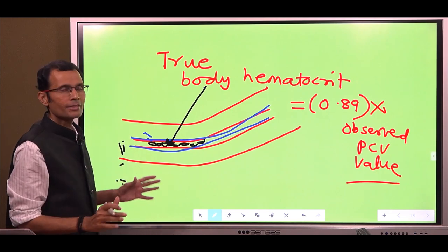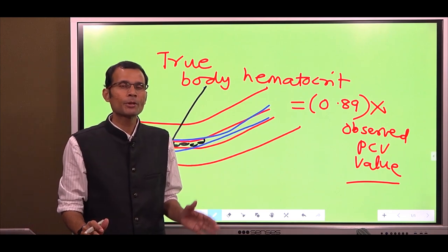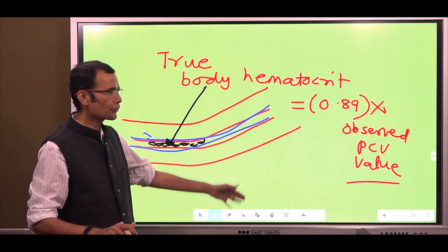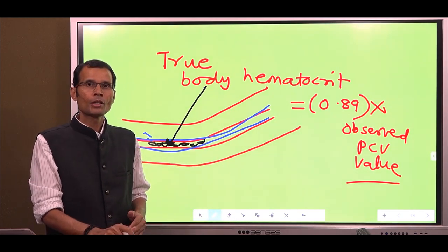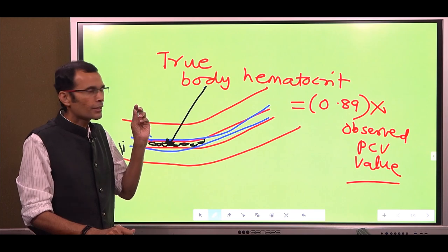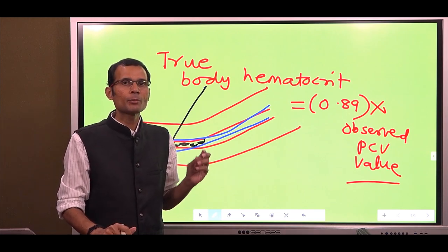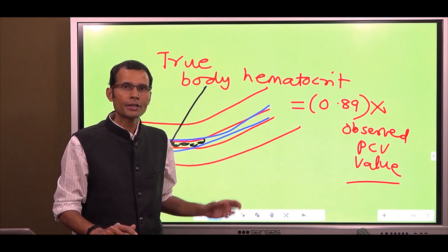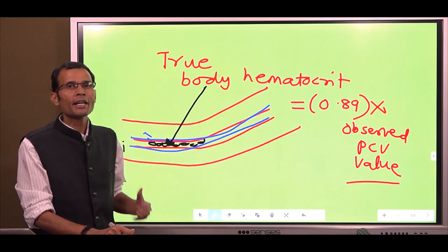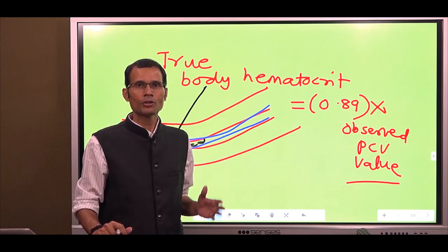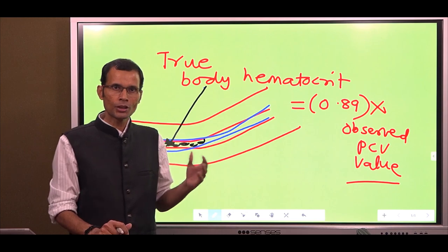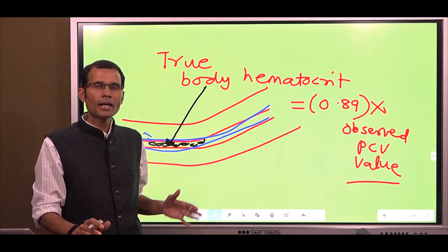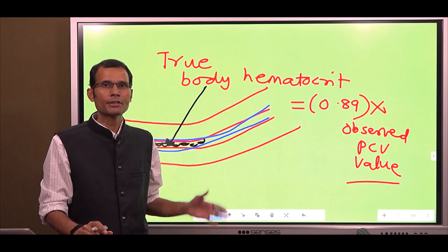So that is the difference between the observed PCV value, which is observed in the Wintrobe's tube, versus what is the actual situation in the body - that is the true body hematocrit. That is the technical difference between PCV and hematocrit. Thank you.